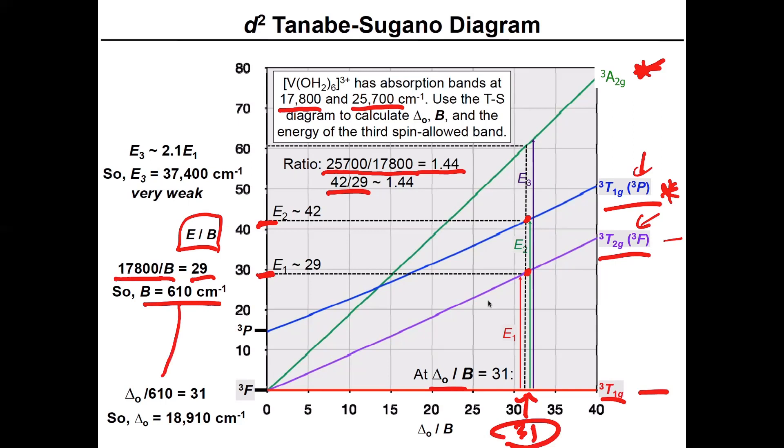So we can then substitute in the 610 here to calculate what the ΔO value for this compound is. And it's 18,910 wave numbers. And that's effectively what you were able to do is just by simply taking the experimental data, ratioing the energies of the transitions. And then you basically have to extrapolate to values that fit that data on the Y axis. Then you can take those numbers, go back to where they're located on the X axis, and then basically extrapolate down. And that's how you do this.